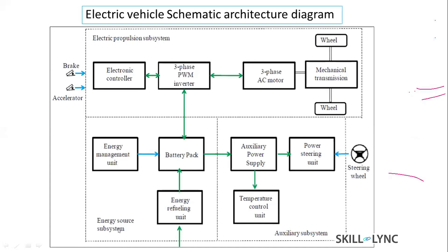Starting from the energy source subsystem: the energy refueling unit may be from home or any place where electricity is available, which can be used for charging the battery packs. In a vehicle, there will be an energy management unit which closely monitors the health of the battery and also uses battery pack cell balance information to monitor the battery pack health.